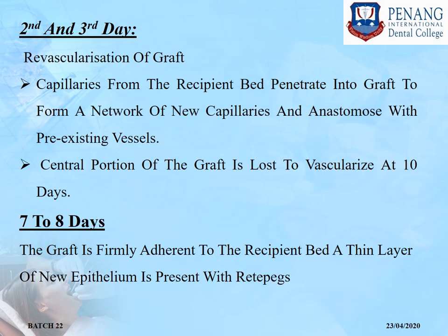On the second and third day, the revascularization phase begins. Capillaries from the recipient bed penetrate into the graft to form a network of new capillaries and anastomose with pre-existing vessels. The central portion of the graft is last to revascularize at around 10 days. Circulation of blood is re-established in pre-existing blood vessels. A fibrous union is established between the graft and the underlying connective tissue bed. Re-epithelization occurs mainly by proliferation of epithelium from adjacent tissues. By seven to eight days, the graft is firmly adhering to the recipient bed with a thin layer of new epithelium present.